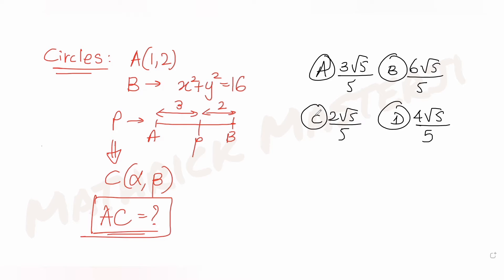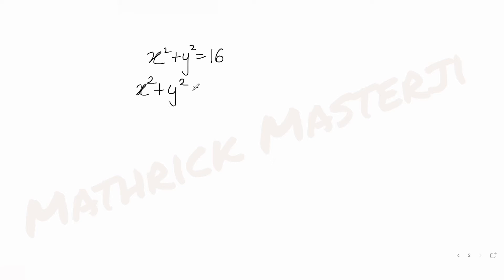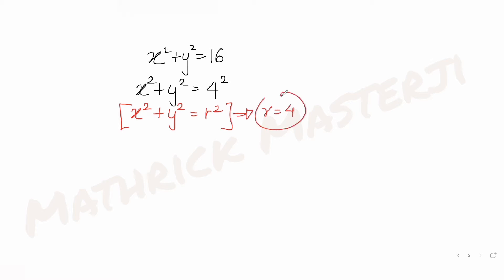First, let's understand point B. B is any point on the curve x² + y² = 16. This is the equation of a circle — 16 written as 4². Comparing with the general form of a circle's equation, the radius is 4 and the center is at the origin.